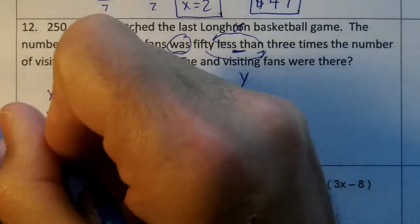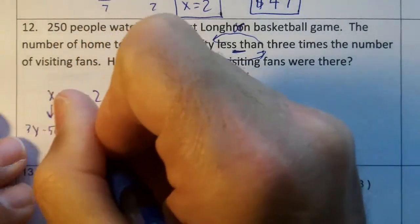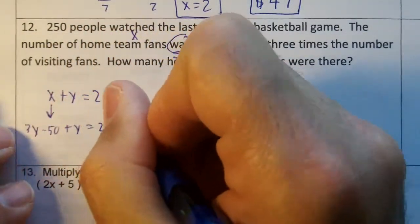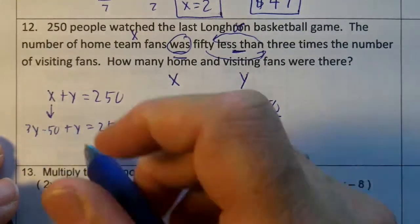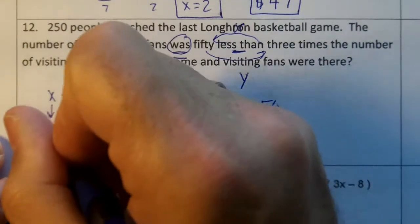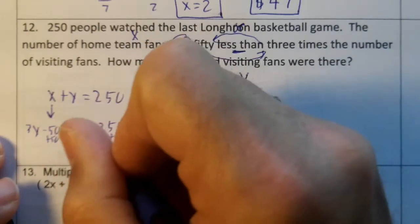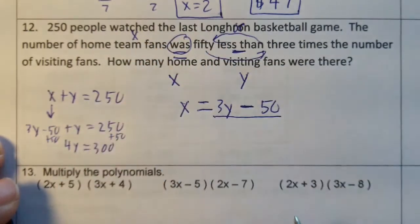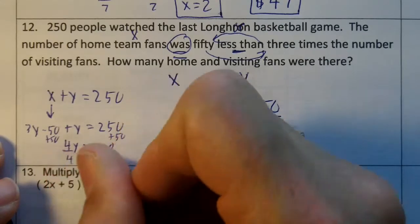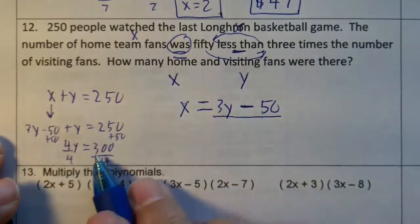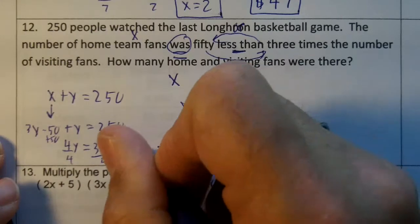So we're going to write down 3Y minus 50 plus Y equals 250. 3Y plus 1Y is 4Y. We're going to add the 50 across, so we get 4Y equals 300. We'll divide by 4, and Y goes into 300 75 times.